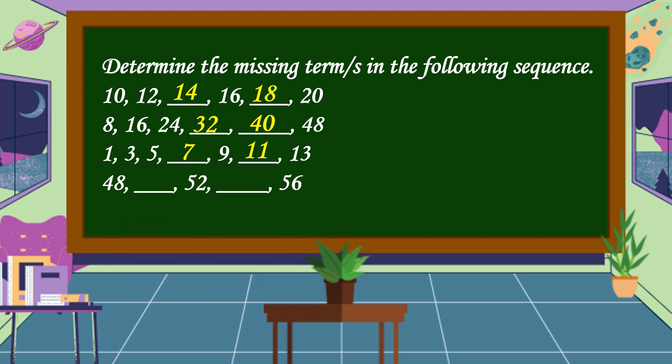Next, 48, blank, 52, blank, 56. What are the missing terms? Alright, the missing terms are 50 and 54. This is skip counting by 2 starting at 48: 48, 50, 52, 54, 56.